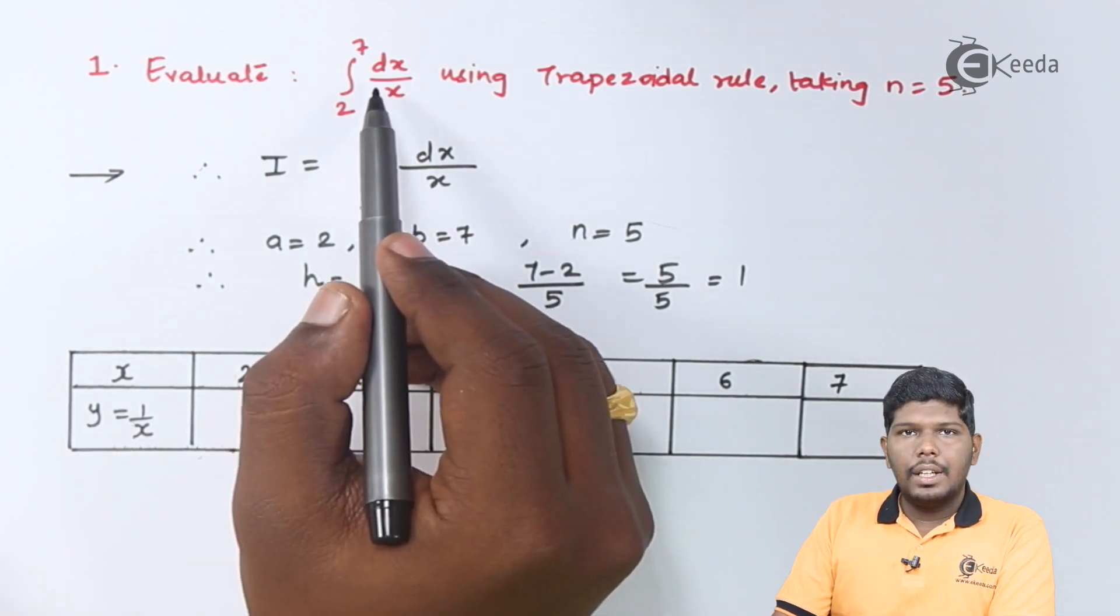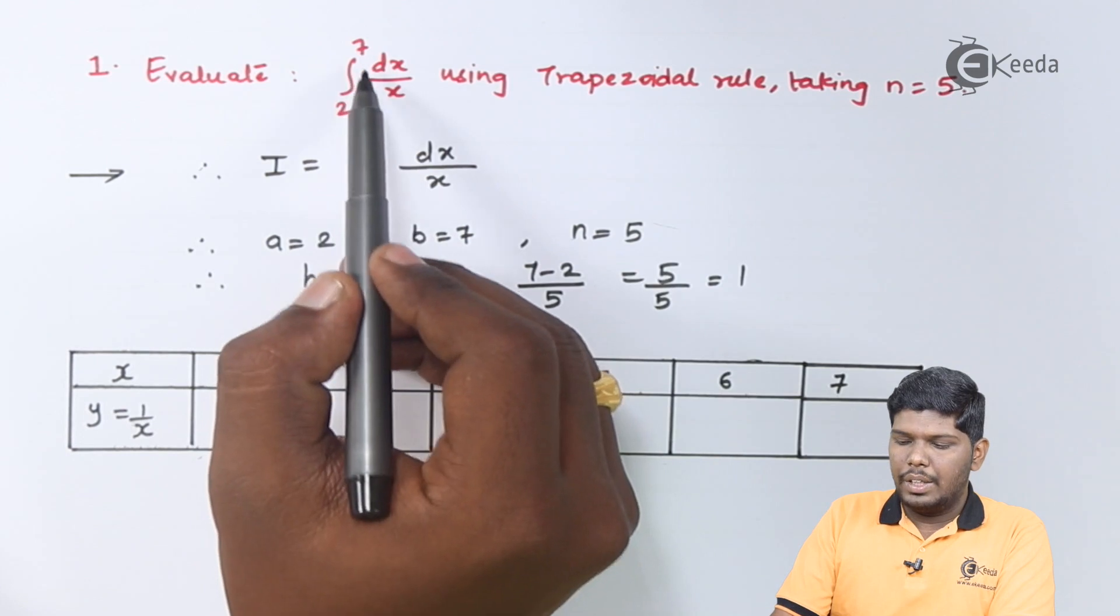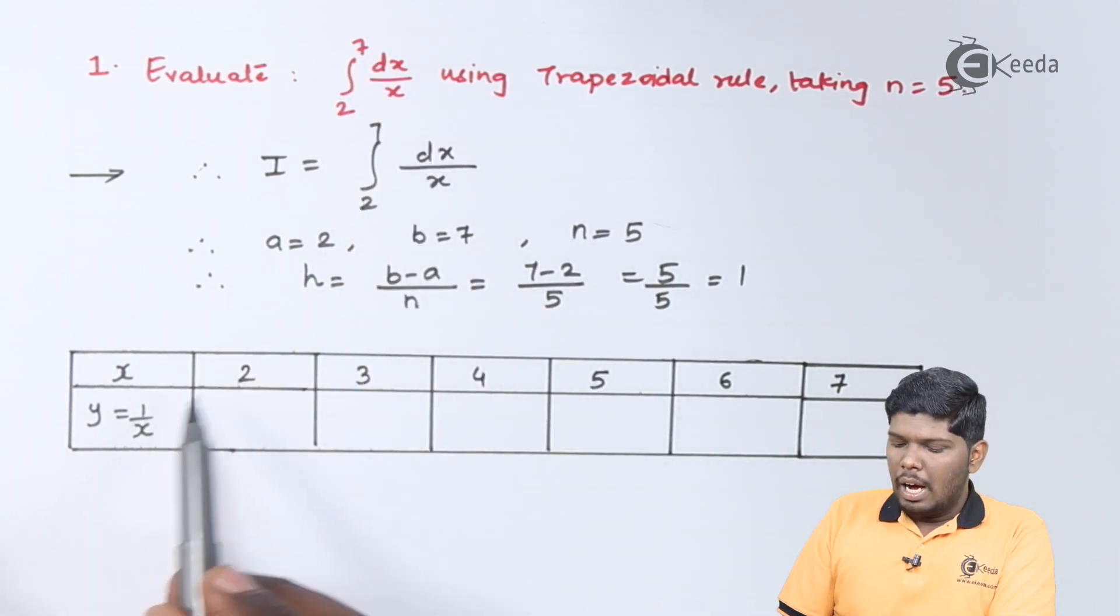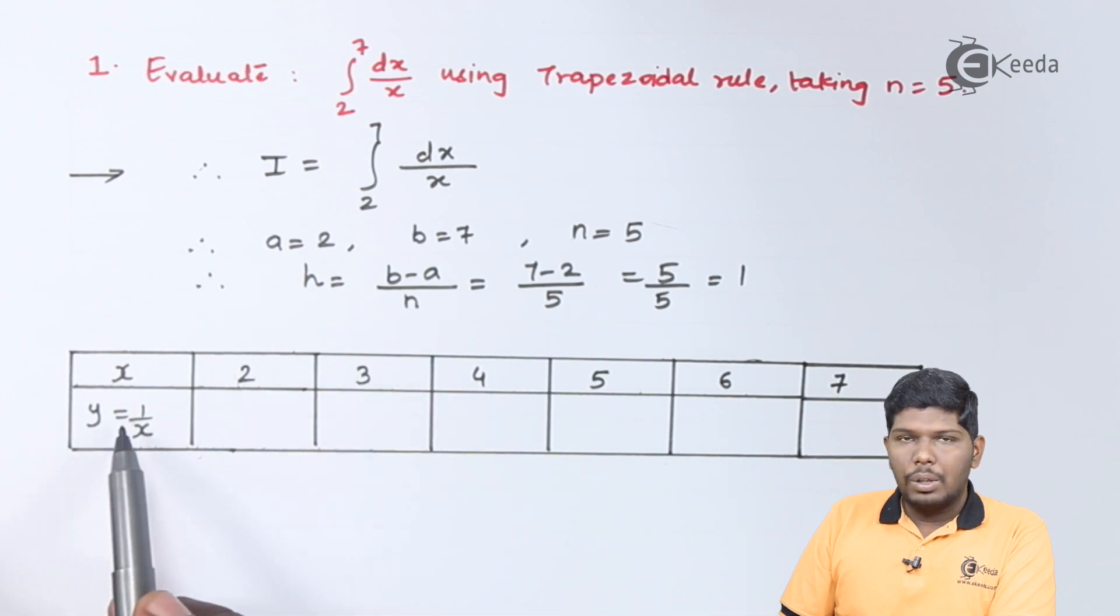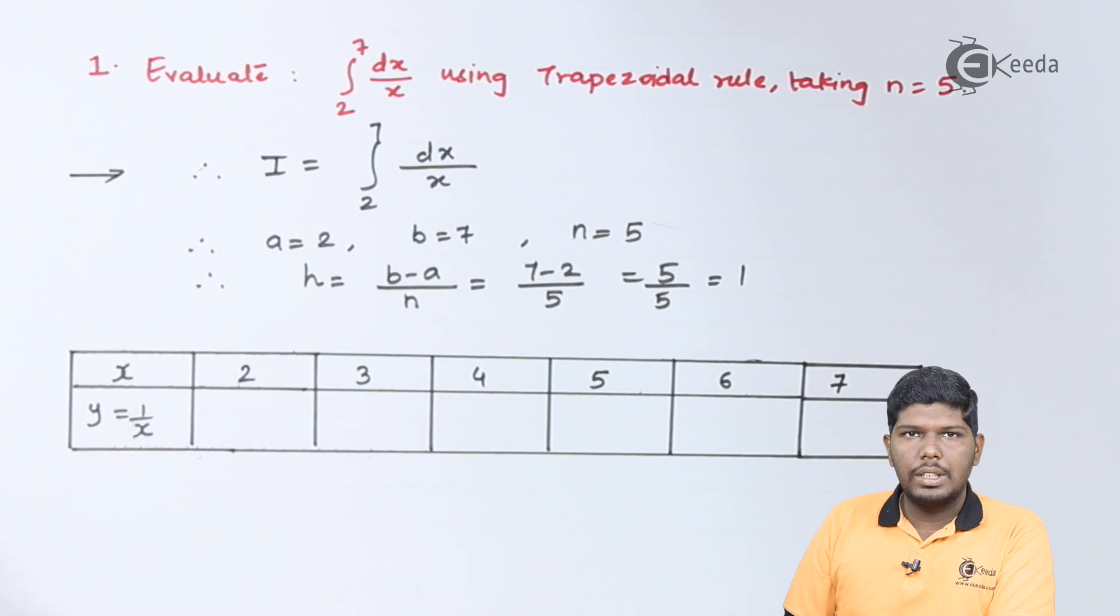Now let us consider the given function as y which can be written as 1 upon x. The function is given as 1 upon x. After substituting x as 2 we will get 1 upon 2. For 3 we have 1 upon 3, for 4, 1 upon 4. Similarly for last term we will have 1 upon 7.